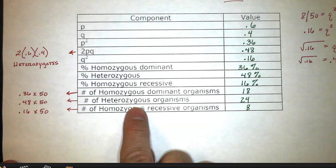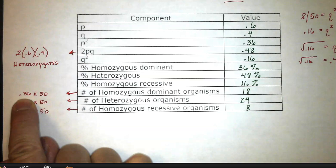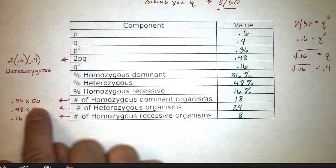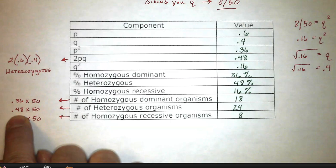And then you just do a little bit of simple math. They're asking you the actual number. So to figure out the number of homozygous dominant, well you take that percentage, 36%, and it's in a decimal point of 0.36. You multiply that times the total number of organisms which is 50. So 36% of 50 is going to be 18 individuals. For heterozygous, 48% of 50 is going to be 24. For homozygous recessive organisms, 16% of 50 is going to be 8 individuals.